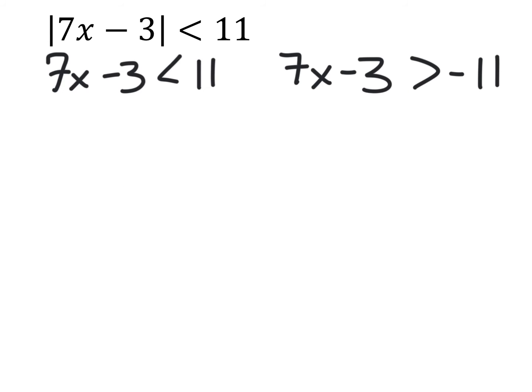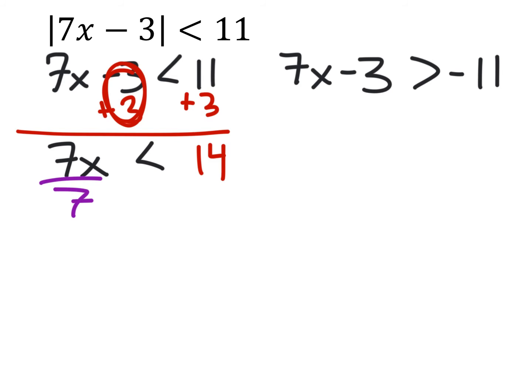Alright, I'll start with this inequality on the left. So what I'm going to do is we'll add 3 to both sides. And this gives me negative 3 plus 3 is going to give us 0. 11 plus 3 is 14. And we still have this 7x is less than 14. The last thing we'll want to do is divide by 7. And this gives us that x is less than 2. And that's our first solution.